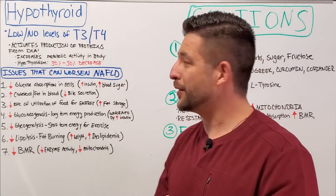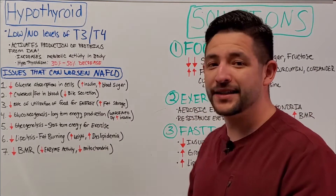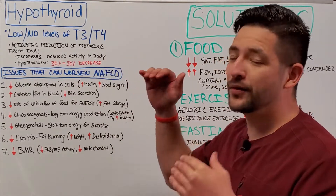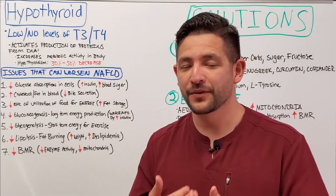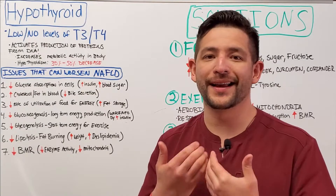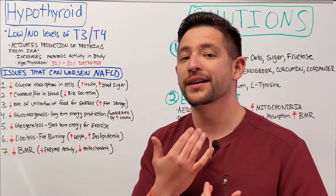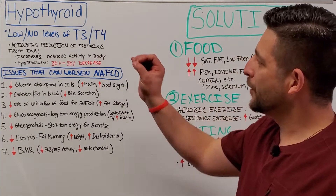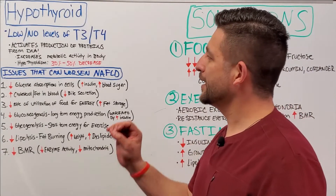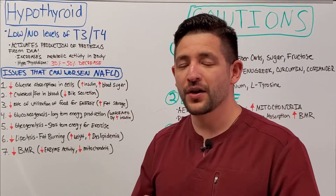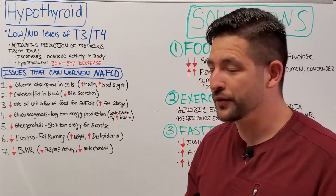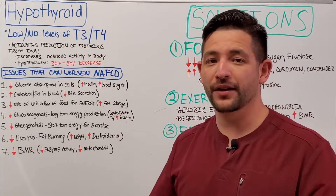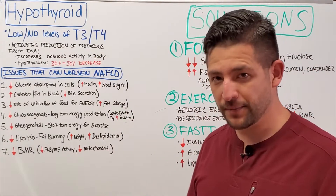The first thing we need to understand about hypothyroid is what that word means. Hypothyroid refers to your thyroid gland, which is an important endocrine gland found in your throat area, and it refers to the thyroid producing either very low levels or no levels of T3 and T4, which are the thyroid hormones that are often talked about.